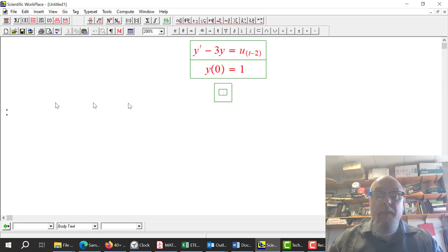We're going to take the transform. The transform of y prime is sf minus y naught, and then minus 3 times the transform of y is f.